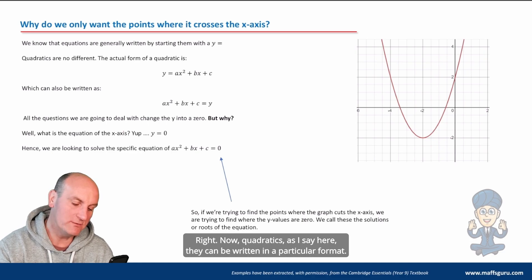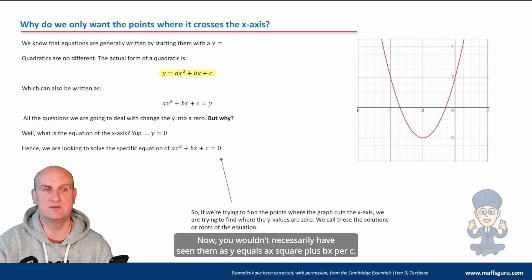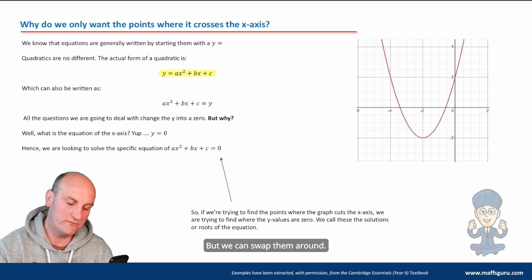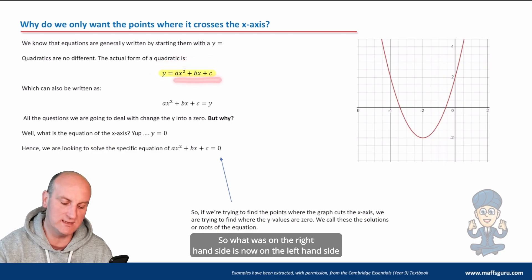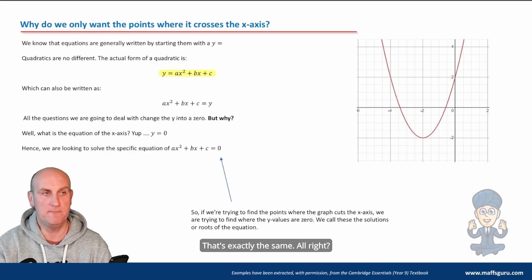they can be written in a particular format. Now, you wouldn't necessarily have seen them as y equals ax squared plus bx plus c. I can't really remember. But we can swap them around. So if you notice here, all I've done is moved each side of the equation to the other side. So what was on the right-hand side is now on the left-hand side. And what was on the left-hand side is now on the right-hand side. That's exactly the same.